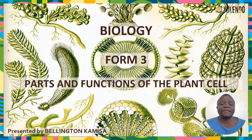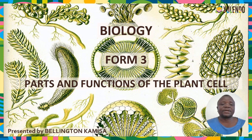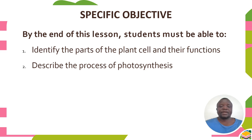Welcome again to this lesson, biology form 3. We are going to look at parts and functions of the plant cells. Initially, we looked at some of the issues pertaining to photosynthesis, but now we are supposed to look at what are the parts of the plant cell. You are with me, Barrington Kamisa. By the end of this lesson, you as students are supposed to identify the parts of the plant and their functions. Secondly, you have to describe the process of photosynthesis and understand how it takes place.